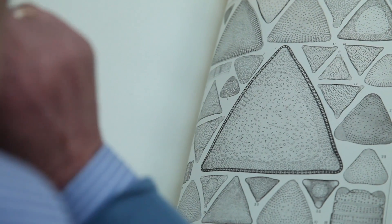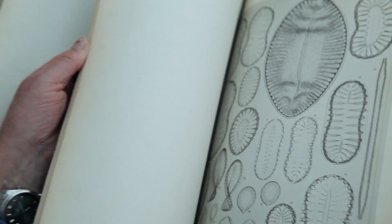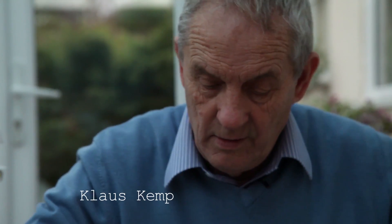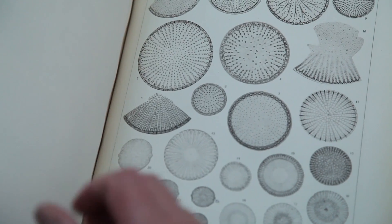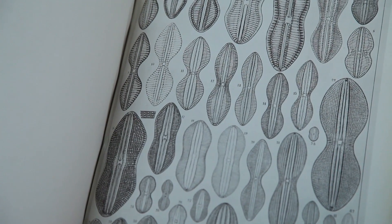These are known as Triceratium, tri meaning three of course. Surirellas, Campylo Discus, incredible structures. And all I can say is for anything to be so intricate, so well sculptured, it is just astounding.